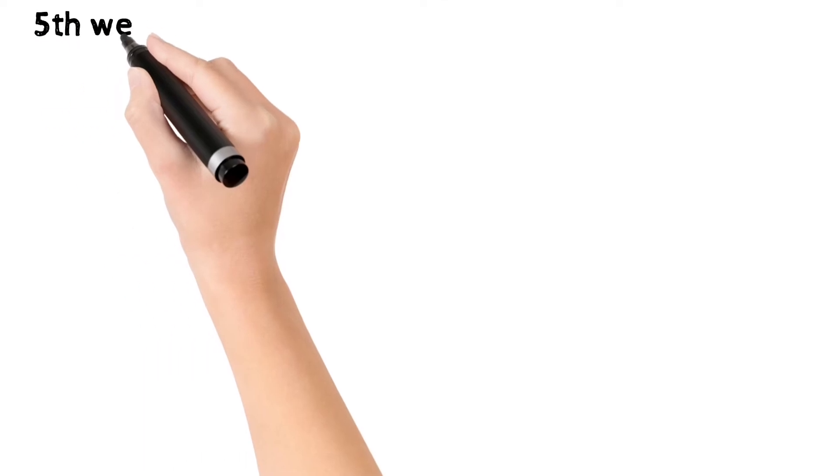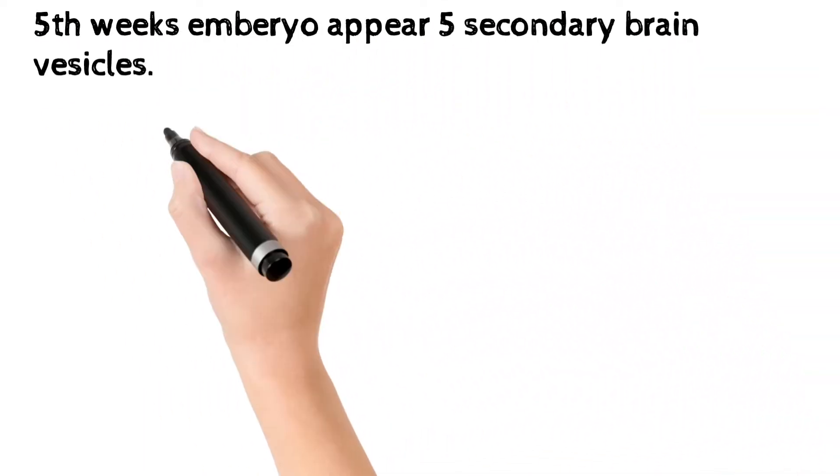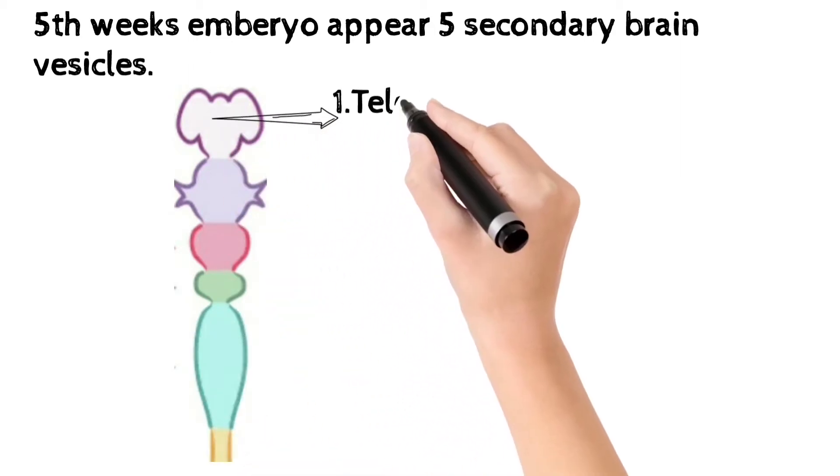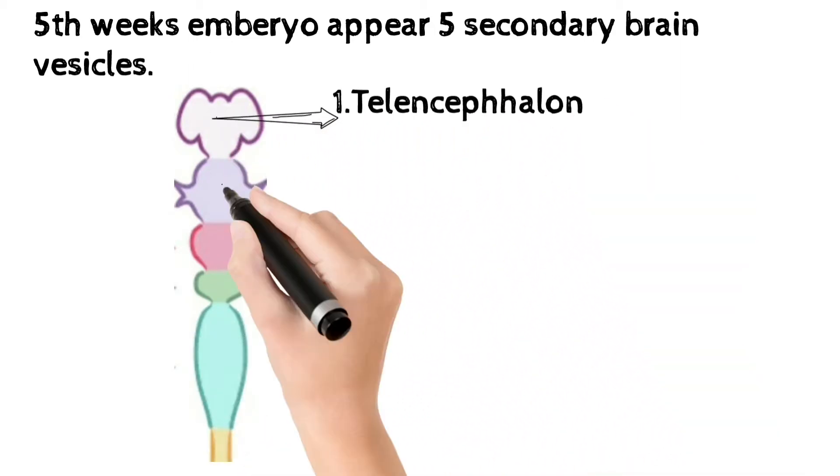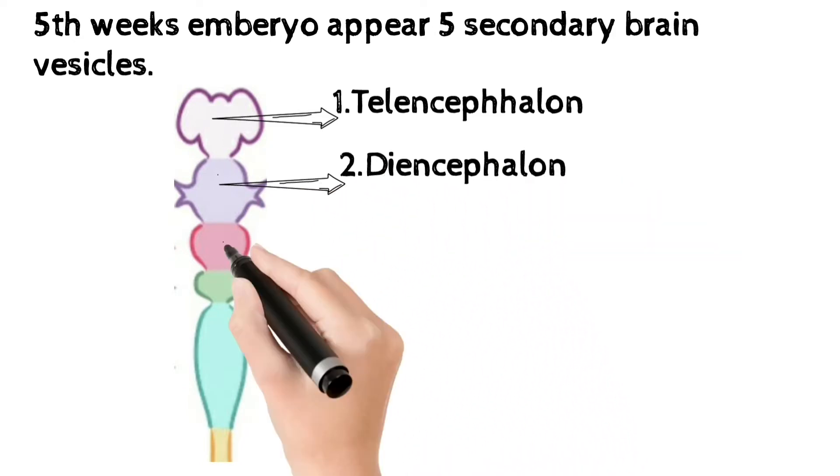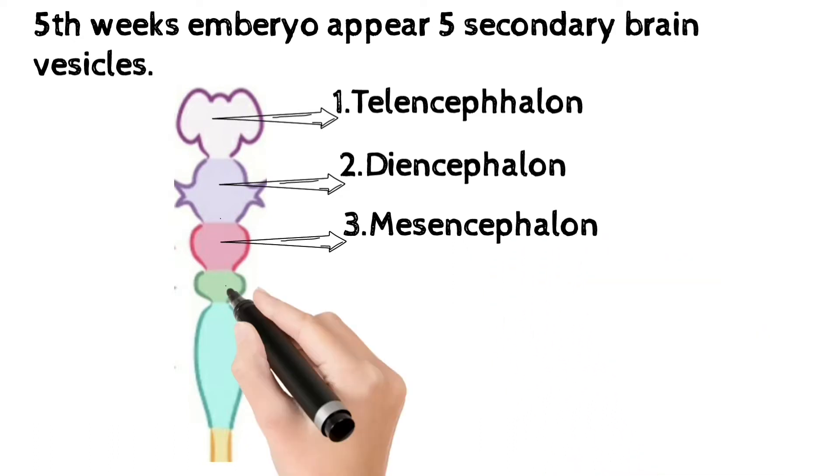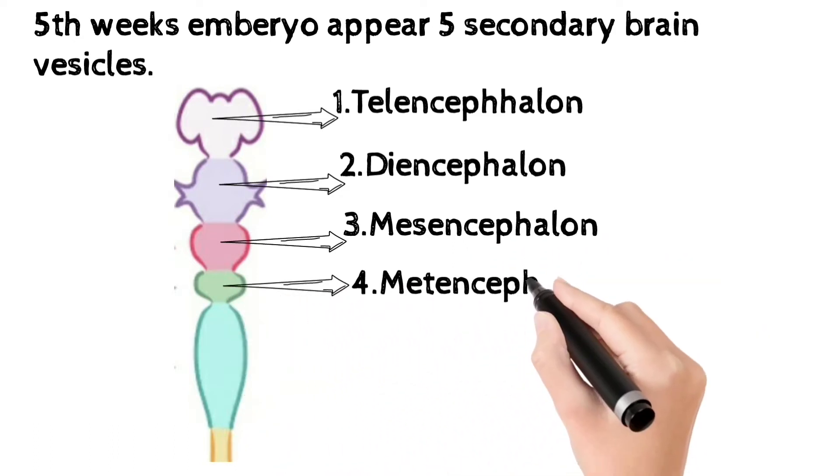In 5th week embryo, appear 5 secondary vesicles in brain. First is telencephalon. Second is diencephalon. Third is mesencephalon. Fourth is metencephalon.